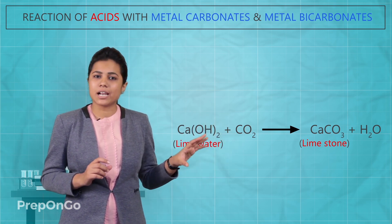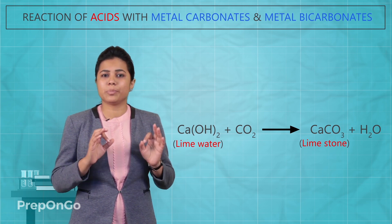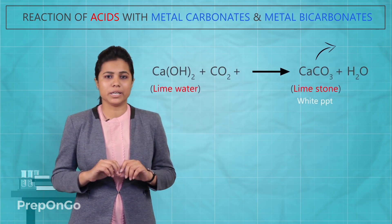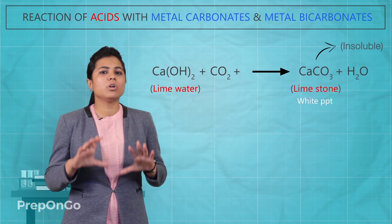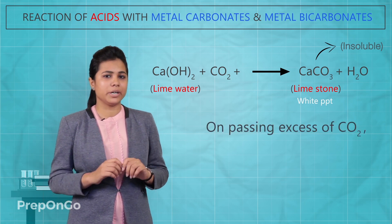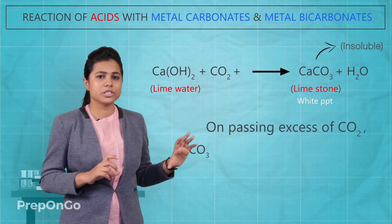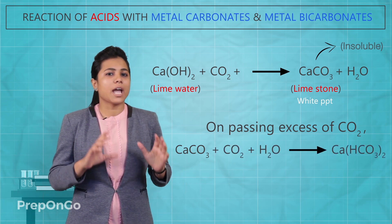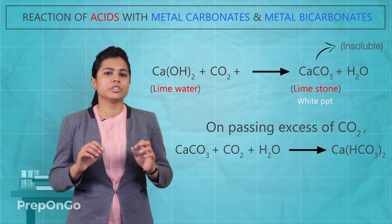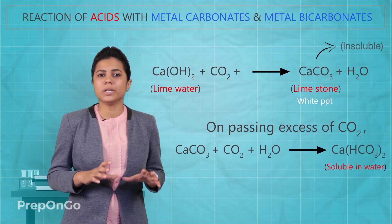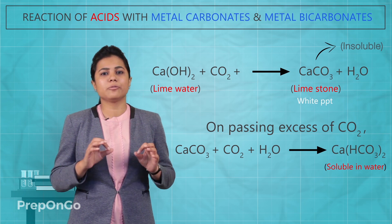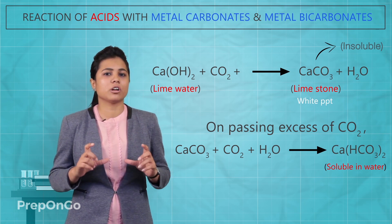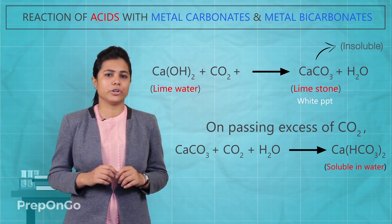This calcium carbonate is the white precipitate which appears milky to us. On passing excess carbon dioxide into this calcium carbonate solution, we get calcium hydrogen carbonate, which is soluble in water, and from which we can again get the calcium hydroxide solution — the lime water.